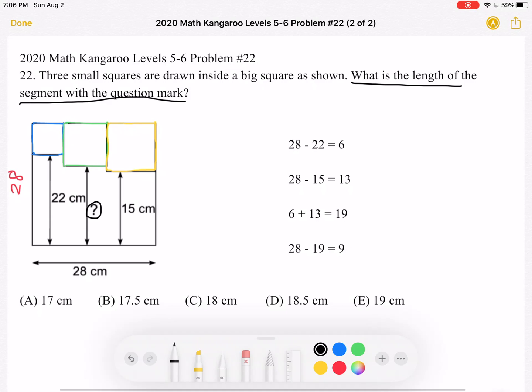So our focus should be on finding the side length of the green square. And we can do that by finding the side lengths of the blue square and the yellow square. Let's start with the blue one.